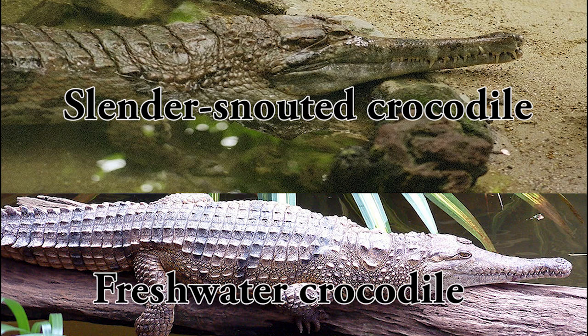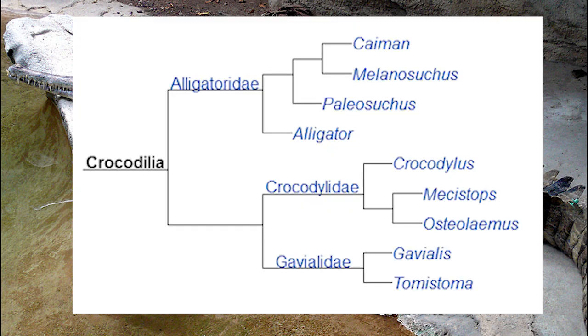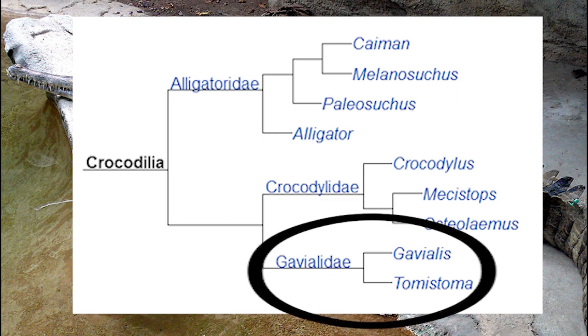The slender-snouted and freshwater crocodile both share similarly thin snouts like that of the Gharial, but lack the over-protruding eyes and the ghara. The False Gharial also lacks protruding eyes and a ghara on adult males. There has been much debate whether it is a true crocodile or not; closer looks at its DNA have placed it in the same superfamily as the Gharial.